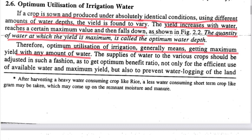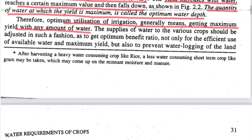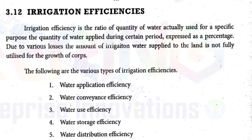Next is optimum utilization of irrigation water. When we sow the crop and harvest, different amounts of water depth are used. If yield increases with more water, we increase the amount; if yield decreases with more water, we use less. The optimum water depth gives maximum yield, and this is called optimum utilization of irrigation — also referred to as irrigation efficiency.